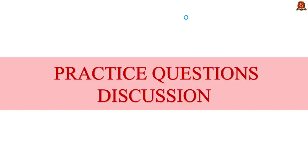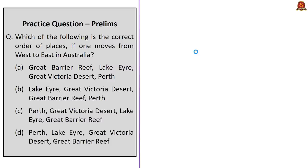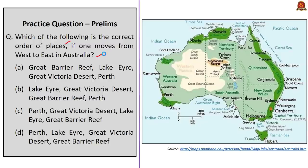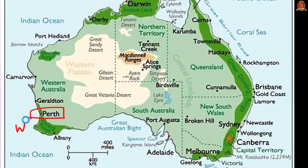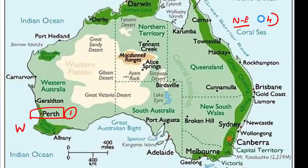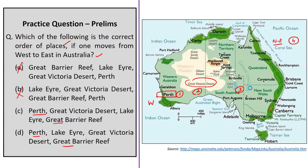In the practice questions session: the first is a map-based question asking the correct west-to-east order of places in Australia — Great Barrier Reef, Lake Eyre, Great Victoria Desert, and Perth. Perth is on the western coast, so it comes first. Great Barrier Reef is on the northeastern coast in the Coral Sea, so it comes last. Moving from west to east, Great Victoria Desert comes before Lake Eyre. The correct answer is option C: Perth, Great Victoria Desert, Lake Eyre, Great Barrier Reef.